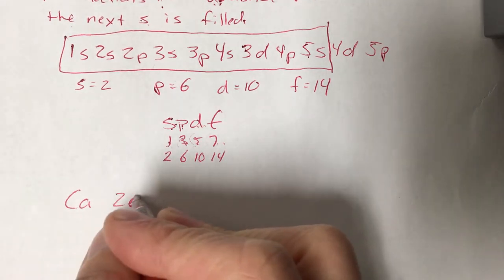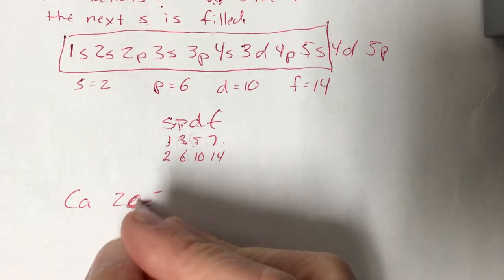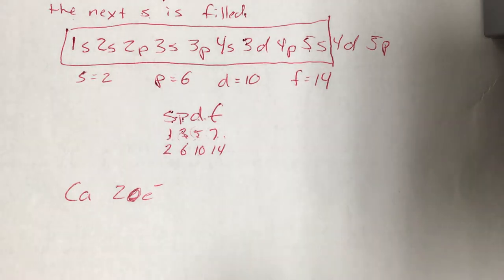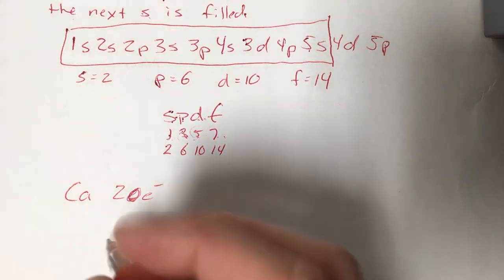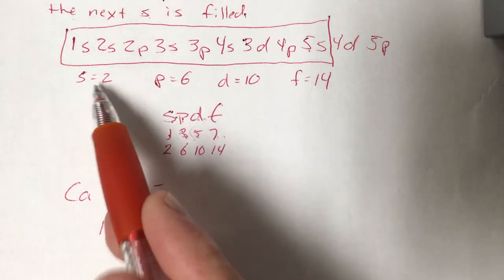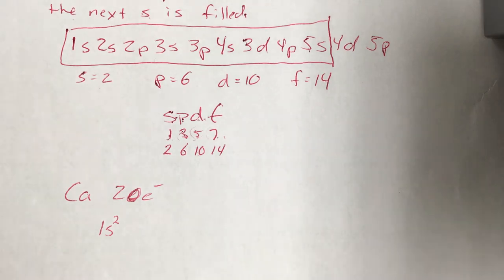We have 20 electrons that we have to write into our electron configuration. So we just start here and work our way across until we've found a happy home for 20 electrons. Our first orbital is 1s, it can hold a maximum of 2 electrons. So we've got 2 of our 20 taken care of, we've got 18 left to go.